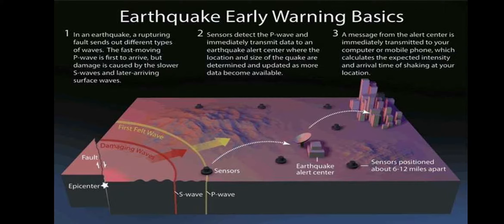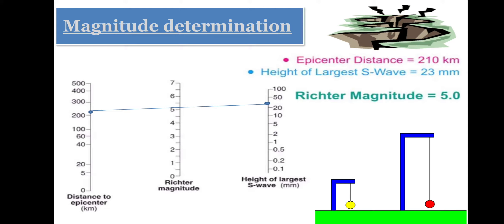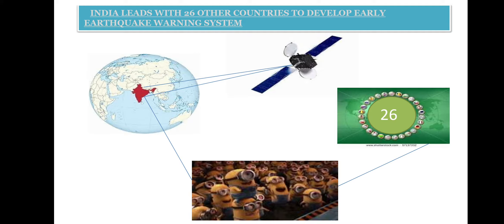For magnitude determination, to determine the earthquake shake, we have the seismometer — vertical seismometer and horizontal seismometer. The yellow ball represents the vertical seismometer and the red ball represents the horizontal seismometer. India leads with 26 other countries to develop an early earthquake warning system, providing early warning connections with those countries.